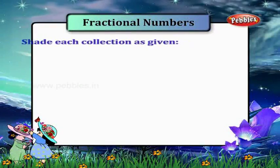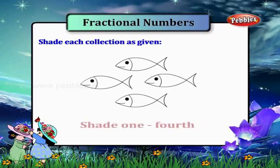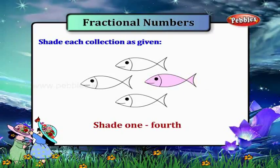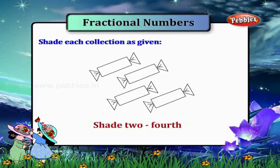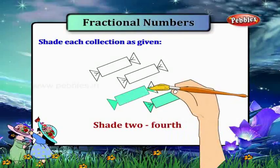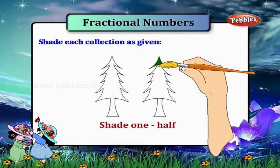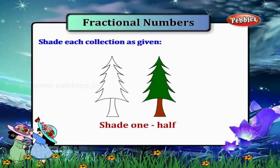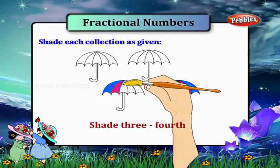Shade each collection as given. Now shade one fourth of this group of fish. Shade two fourth of this. Shade one half of this. And shade three fourth of this.